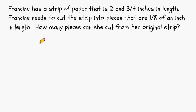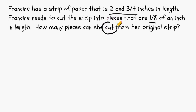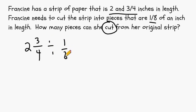In this problem, Francine has a strip of paper that is 2 and 3 quarters of an inch in length. Francine needs to cut the strip into pieces that are 1 eighth of an inch in length. How many pieces can she cut from her original strip? We see the word 'cut,' which tells us this is a division problem. So we have to start with the total that is being cut up, which is 2 and 3 quarters, and see how many pieces of 1 eighth of an inch we can get. We take this mixed number and rewrite it as an improper fraction: the 4 will remain the same, for the numerator we multiply 4 times 2, which is 8, and add 3, giving us 11.